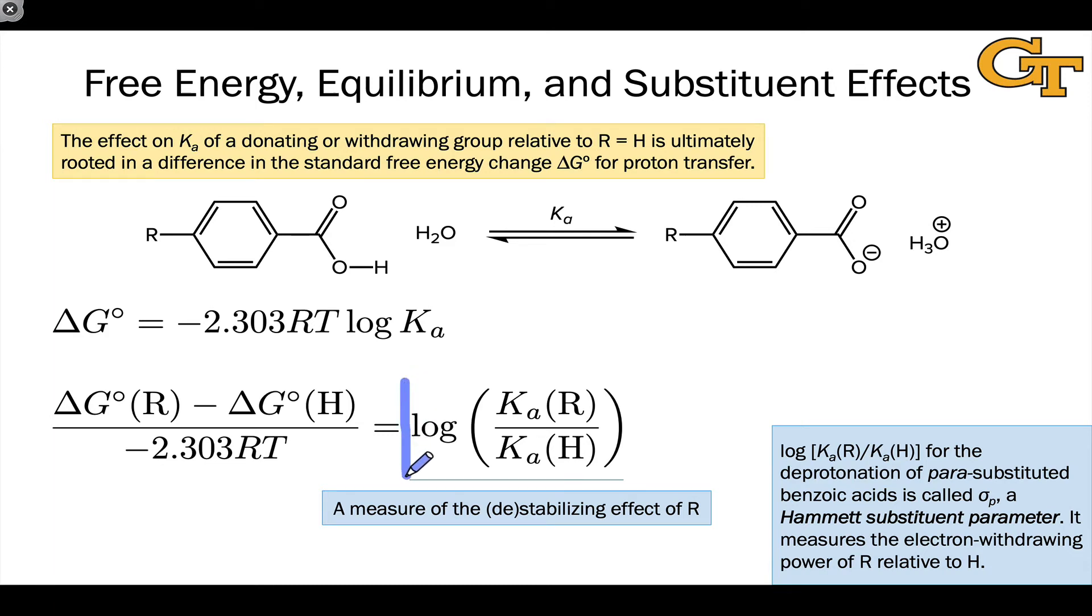We've defined this Hammett sigma parameter, specifically sigma p, as the logarithm of this ratio of equilibrium constants, and actually rate constants can also be used here.